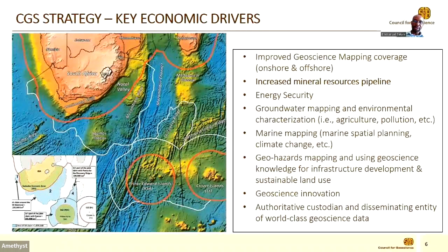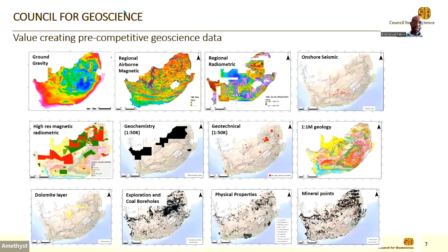As a strategy for the CGS, we are looking at onshore and offshore mapping with the aim of contributing to the economic development of the country through increasing the mineral resource pipeline, energy security, ground water mapping, marine mapping, geo hazards, and geoscience innovation — which is what I'll give more emphasis on today. The Council for Geoscience creates data at a competitive stage from which mineral exploration projects are derived.